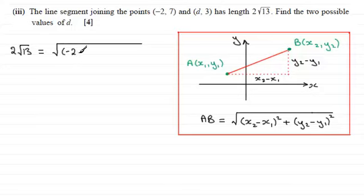I'm going to do (-2 - d)² though. And then to this we'll do plus (7 - 3)².